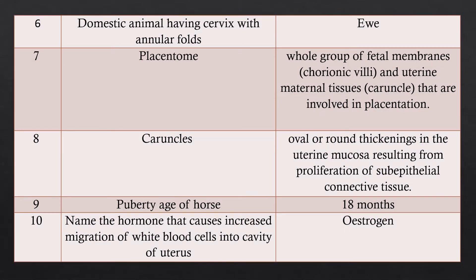Question 6: Name the domestic animal having an annular formation in the cervix. Answer: The ewe is the animal whose cervix has an annular form.